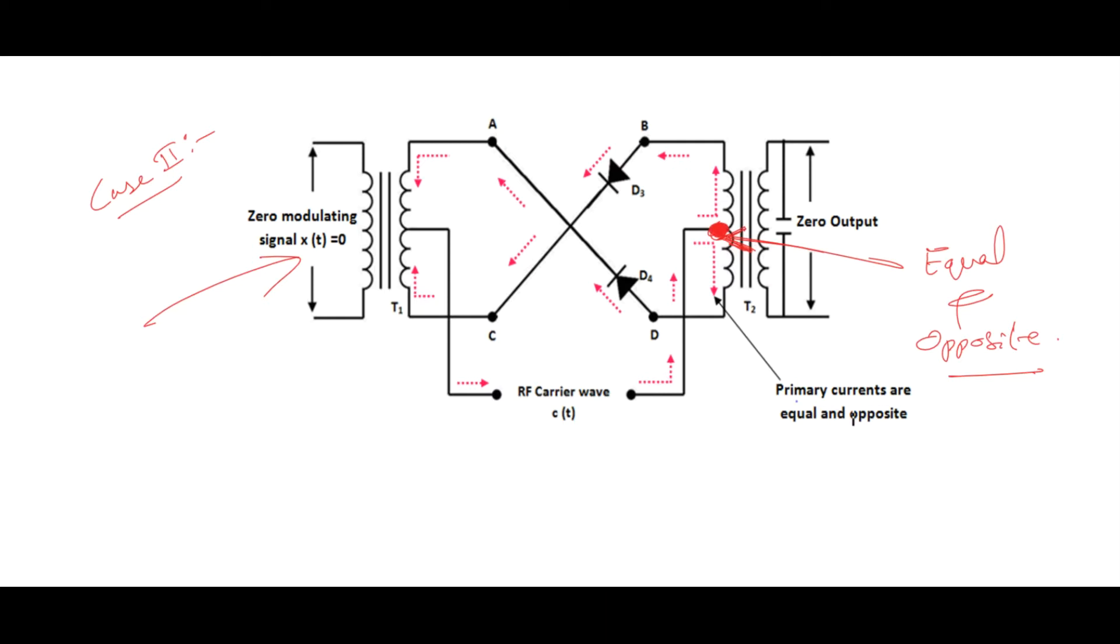Again we can observe that the currents due to D3 and D4 are flowing in opposite direction at this terminal. We can again say that the currents are equal and opposite in magnitude, canceling the effect of each other at this point. There will be no EMF induced in secondary of T2, or again we can say that carrier is fully suppressed or cancelled in this case.